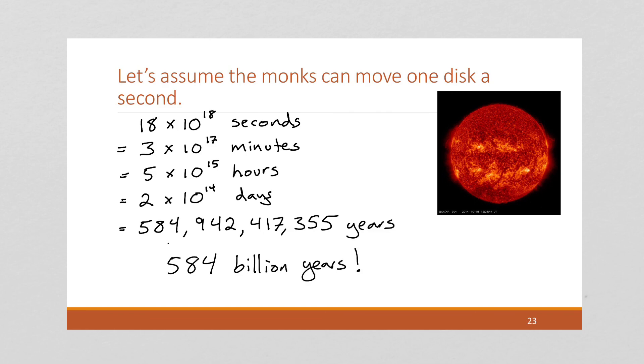Now, the sun only has approximately 5 billion years left, which means that it's going to take the monks 100 times longer than the lifetime that we have left of our sun to finish this. So I'm not really worried about them finishing this and the earth or the sun dying, as is in the myth or the legend.